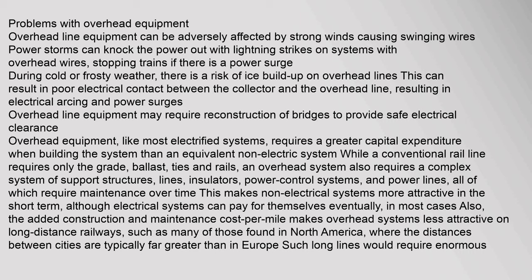Overhead equipment requires a greater capital expenditure when building the system than an equivalent non-electric system. While a conventional rail line requires only the grade, ballast, ties, and rails, an overhead system also requires a complex system of support structures, lines, insulators, power control systems, and power lines, all of which require maintenance over time. This makes non-electrical systems more attractive in the short term, although electrical systems can pay for themselves eventually. The added construction and maintenance cost per mile makes overhead systems less attractive on long-distance railways, such as many of those found in North America.